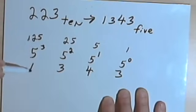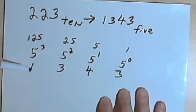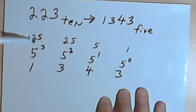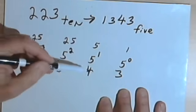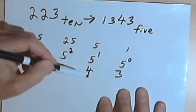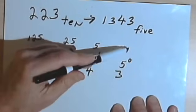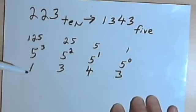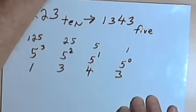If we wanted to check this, we could take that 1343, multiply the 1 by 125, multiply the 3 by 25, multiply the 4 by 5, multiply the 3 by 1, add all of those together, and we get back to 223. So that's one way to do this.